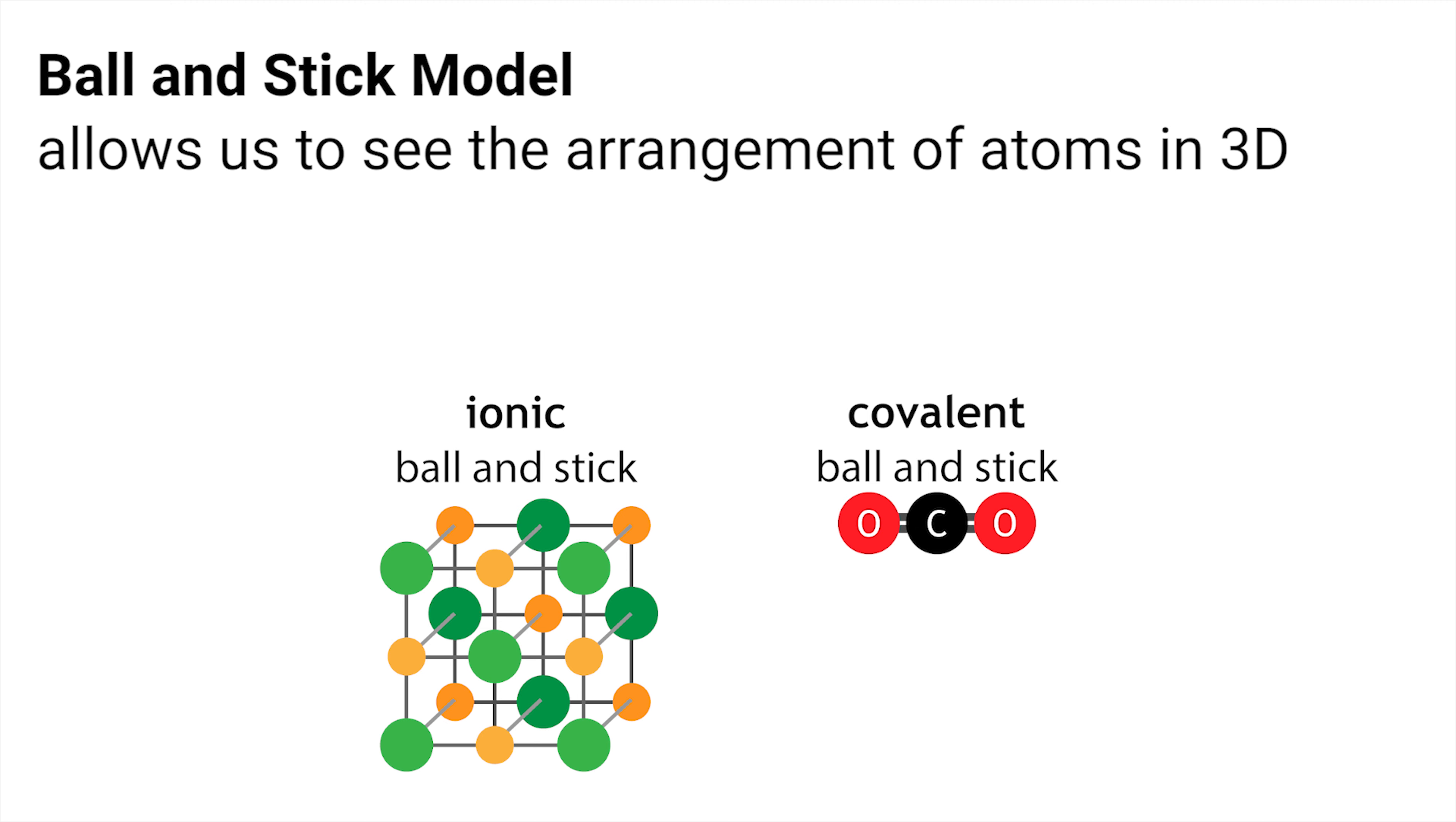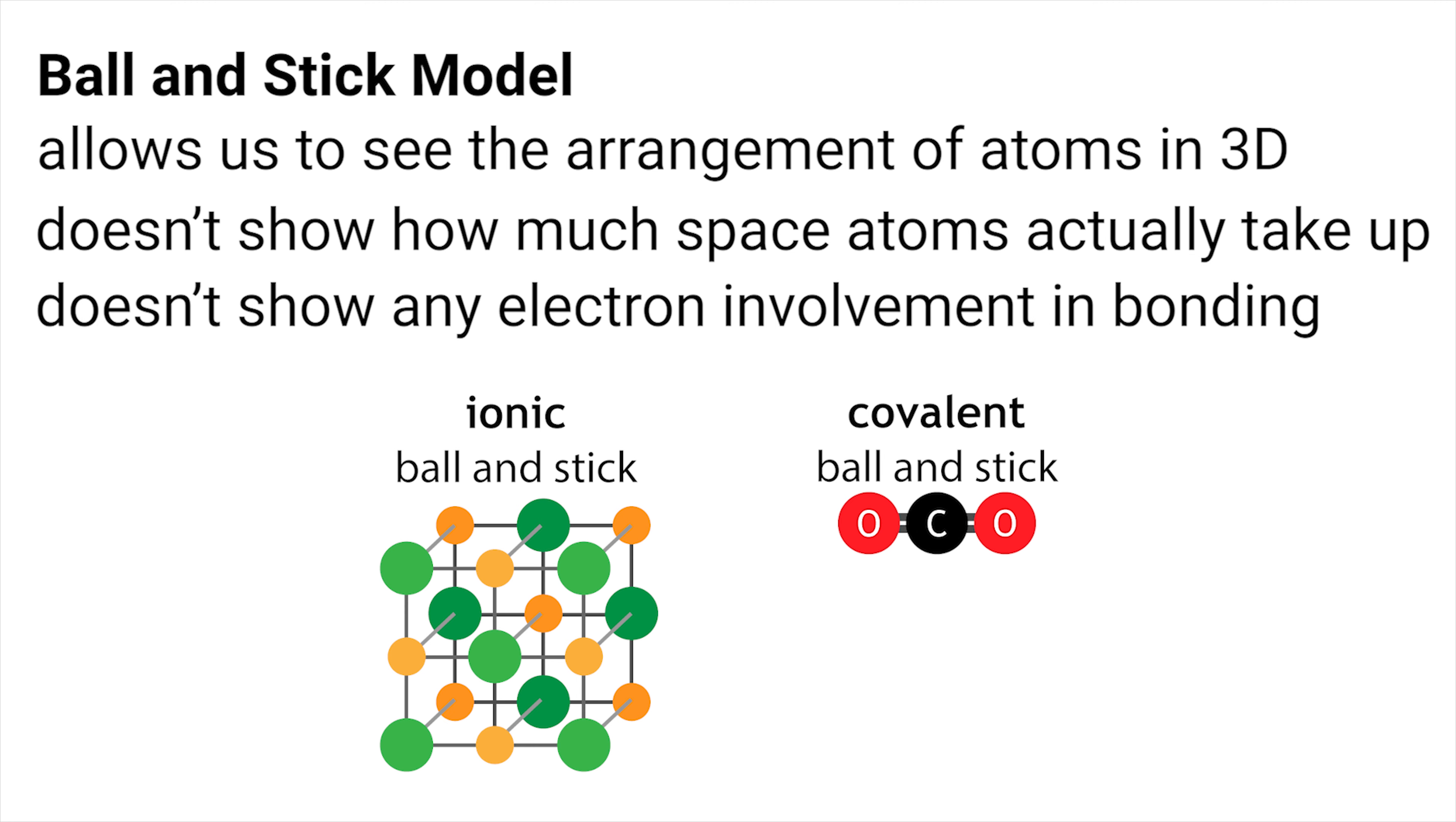The ball and stick model allows us to see the arrangement of atoms in 3D, but it does not give us an accurate image of how much space atoms actually take up. And it doesn't actually give us a proper representation of bonds, because they are not really lines.